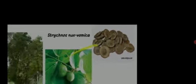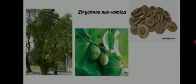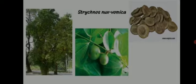There is a place called Kasaragod on the Karnataka-Kerala border, named perhaps after this plant because Strychnos nux vomica grew abundantly in those areas. In Kannada it is called kasarkai.